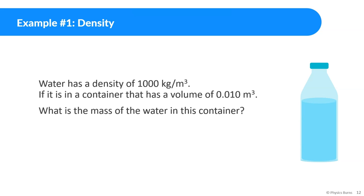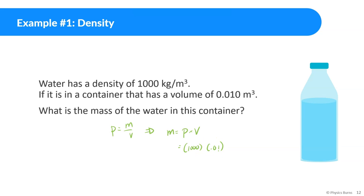First math problem: water has a density of about 1,000 kilograms per meter cubed. If it is in a container that has a volume of 0.010 meter cubed, what is the mass of the water in this container? Density equals mass divided by volume, and we're looking for mass, so mass equals density times volume. Density of water is 1,000 and volume is 0.01 — put that into a calculator and you get about 10 kilograms. That's how we calculate it — a simple algebraic manipulation.